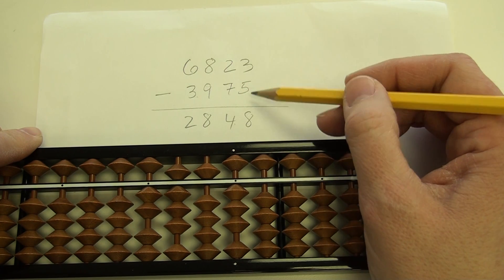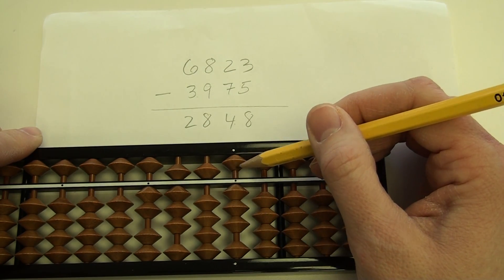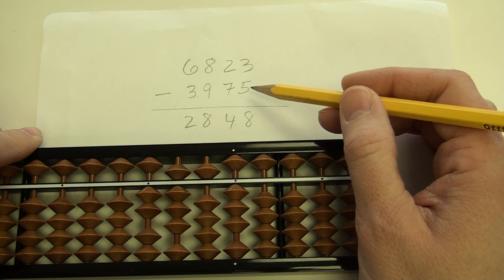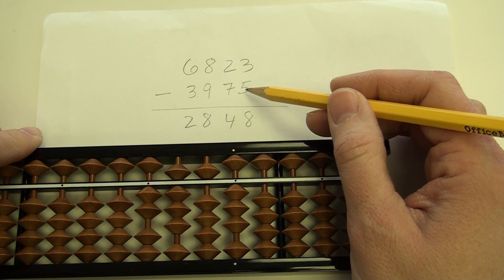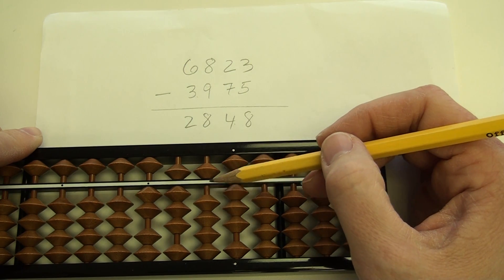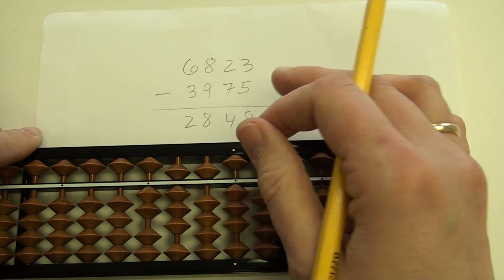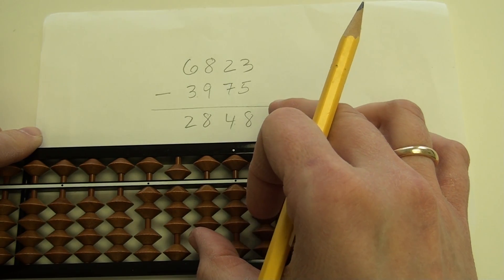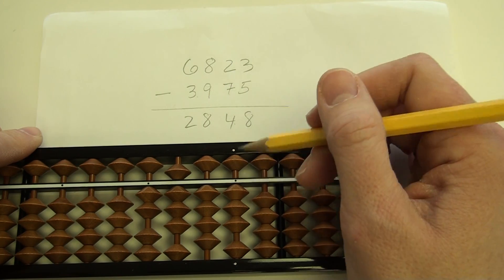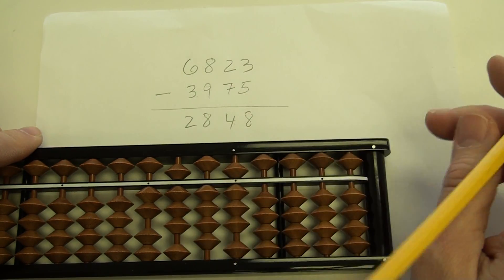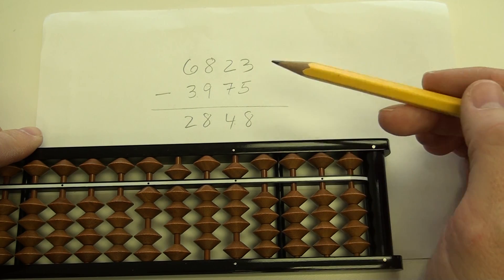Now the last digit, the 1's digit. I want to subtract a 5. The heavenly bead is up here. I can't take away that. I have only 3 earth beads. So again, I have to go to my 10's complement. If I subtract 5, that is equivalent to subtracting 10 and adding 5. I don't have any earth beads. I have just one heavenly bead. So subtracting 10 is the same as subtracting 5 and adding 4. So now I have subtracted the 10. I need to add the 5. So I add 5 because subtracting 5 is the same as subtracting 10 and adding 5.